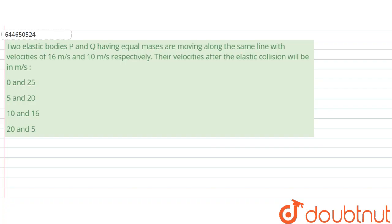The question says that two elastic bodies P and Q having equal masses are moving along the same line with velocities of 16 m/s and 10 m/s respectively. Their velocities after the elastic collision will be in m/s. What would it be?